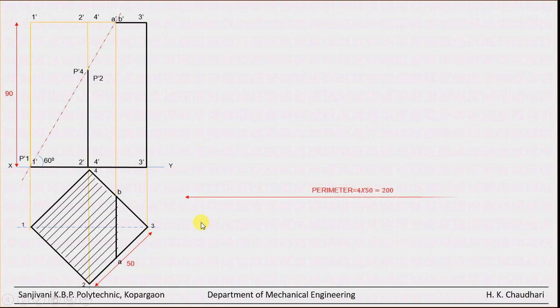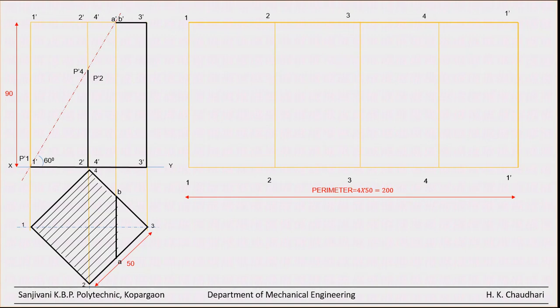So take a length of rectangle as a perimeter which is equal to 200 mm, and the height of the prism of 90 mm. So draw the rectangle. And as usual, divide this rectangle into 4 parts. As it is a square prism, it has 4 faces. So divide it in 4 parts and name the parts 1, 2, 3, 4 and 1 dash again. This is the overlapping edge.